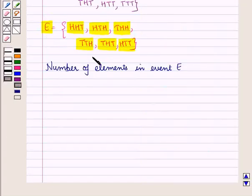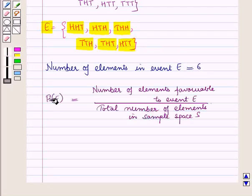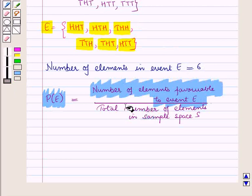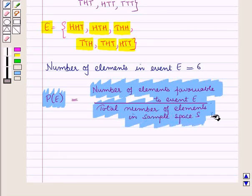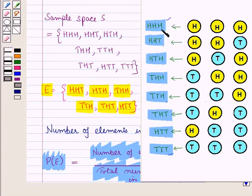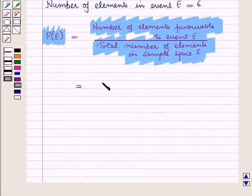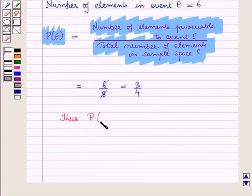The number of elements in event E is 6. Probability P of event E is equal to number of elements favorable to event E upon total number of elements in sample space S. Total number of elements in sample space S is 8 and number of elements in event E is 6. So this is equal to 6 upon 8, which is equal to 3 upon 4. Thus probability P of event E is equal to 3 upon 4.